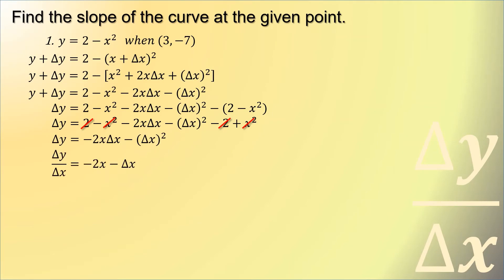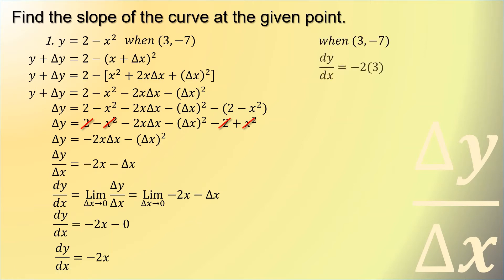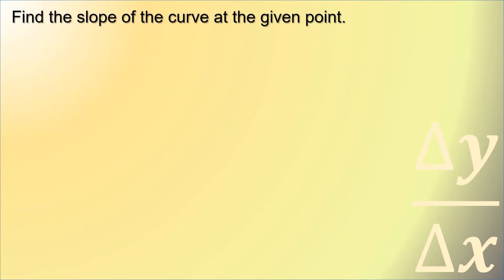Moving y from the left side to the right side of the equation and distributing the negative sign gives negative 2 + x². Cancelling 2 and x² leaves negative 2x·delta x - delta x². Dividing both sides by delta x, the remaining terms are negative 2x - delta x. Taking the limit as delta x approaches 0, substituting 0 gives dy/dx = negative 2x. Substituting x = 3, dy/dx = negative 2 times 3 = negative 6. So the slope at point (3, -7) is -6.